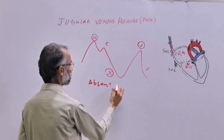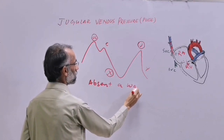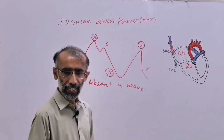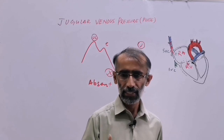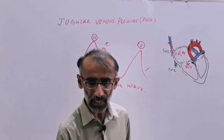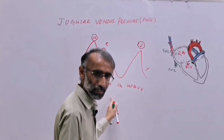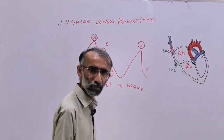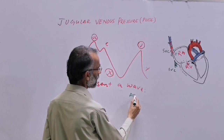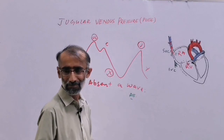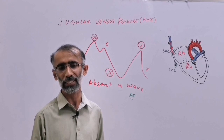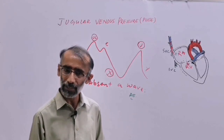Absent A wave: since the A wave is produced by right atrial contraction, if there is no contraction, the A wave will be absent. The classic example is atrial fibrillation — there is no organized contraction, so the A wave is absent.